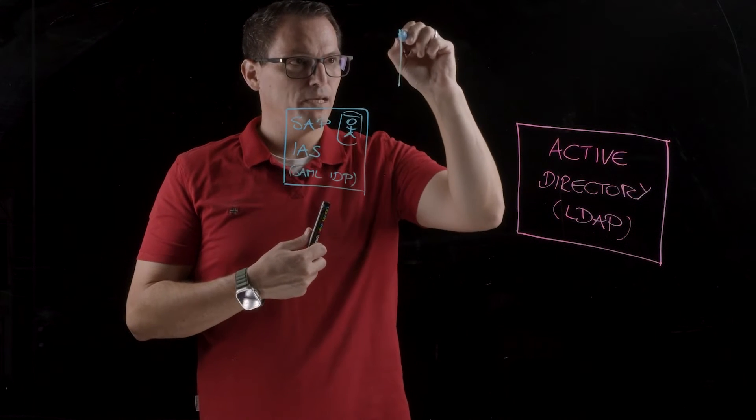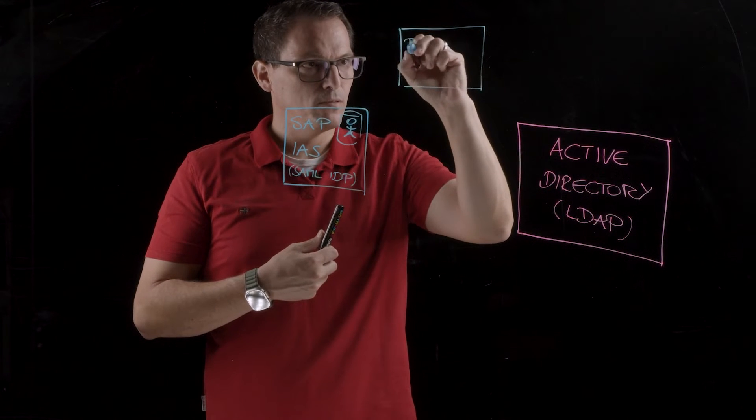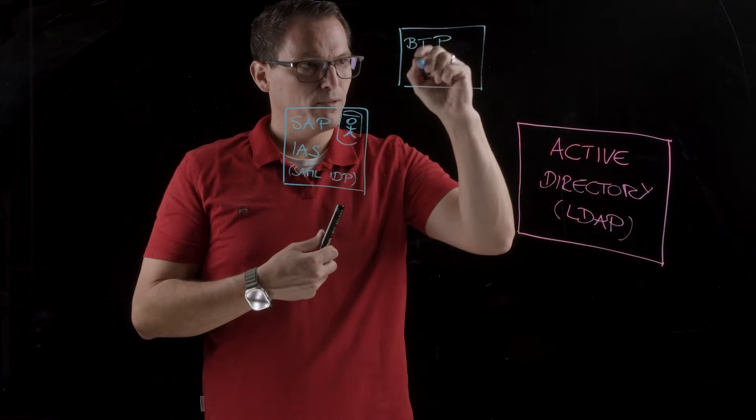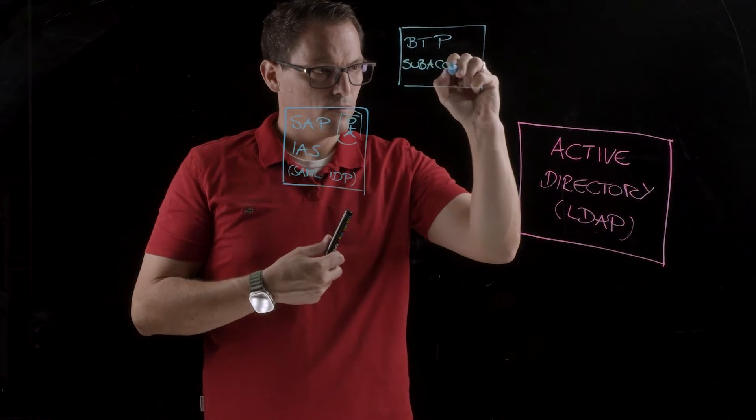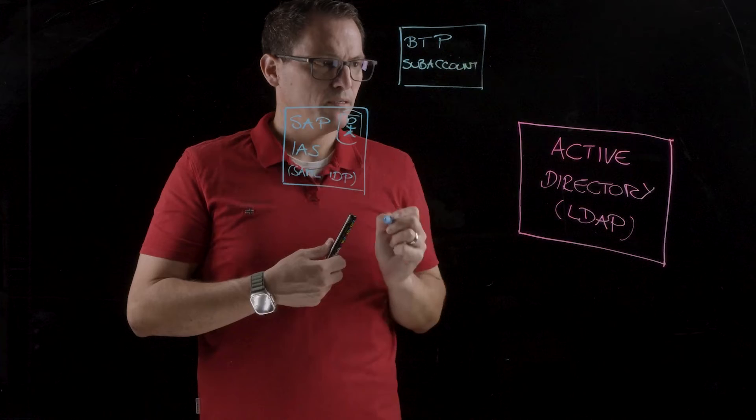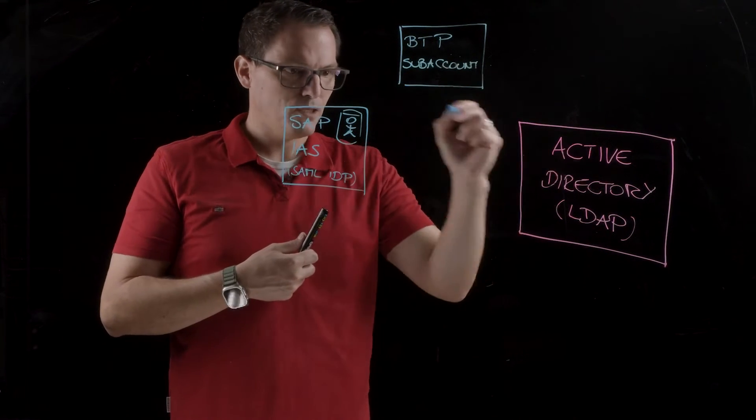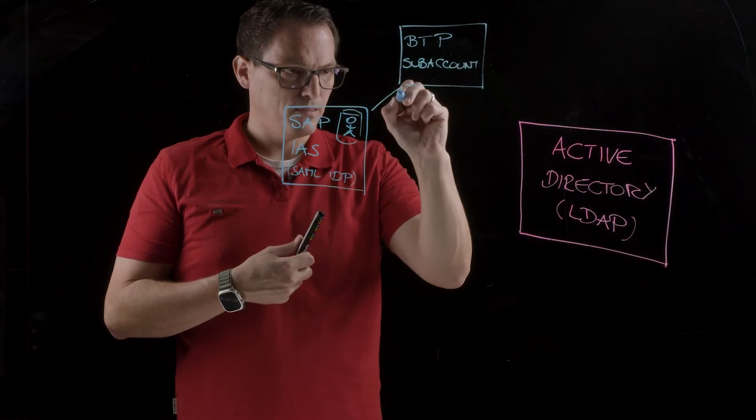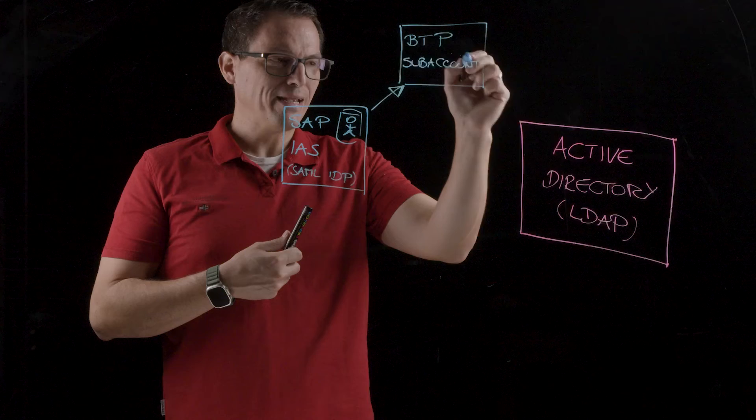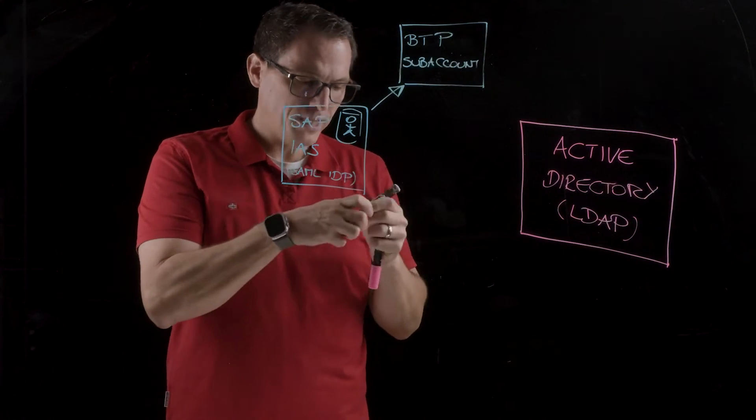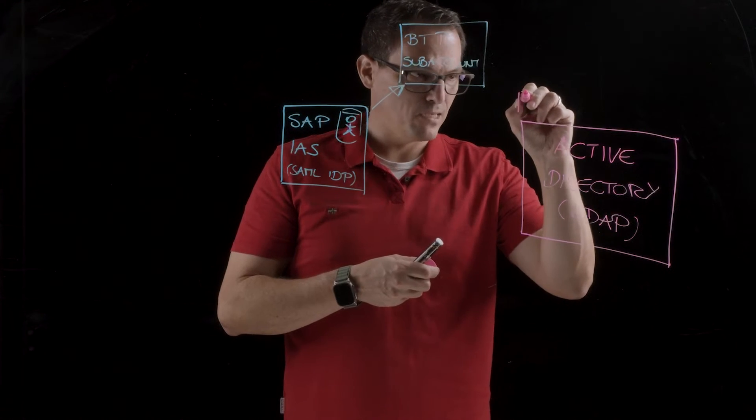But this is also in the cloud. So we have the BTP SAP Account, Business Technology Platform SAP Account. Okay, we have the SAP Account here. And this is talking via the SAP Account with the Active Directory. So we have the SAP Account here, but we cannot call it directly from the SAP Account. We need the cloud connector as additional component here in the on-premise landscape.